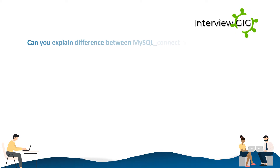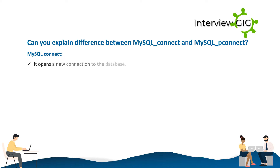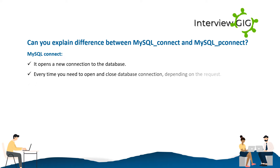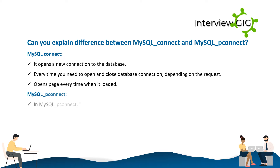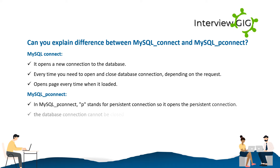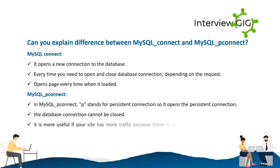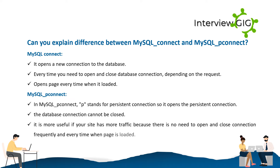Can you explain the difference between mysql_connect and mysql_pconnect? mysql_connect opens a new connection to the database. Every time you need to open and close the database connection depending on the request; it opens a new connection every time the page is loaded. mysql_pconnect: the P stands for persistent connection, so it opens a persistent connection. The database connection cannot be closed. It is more useful if your site has more traffic because there is no need to open and close the connection frequently every time a page is loaded.